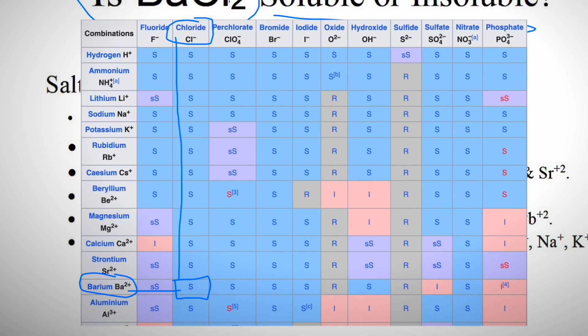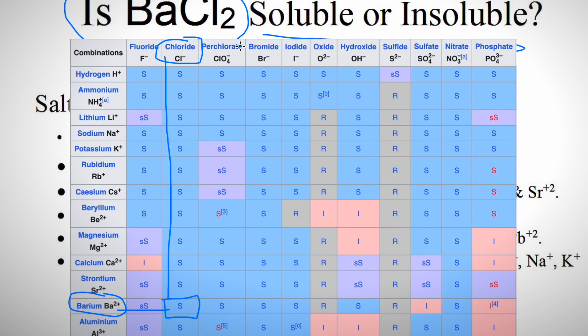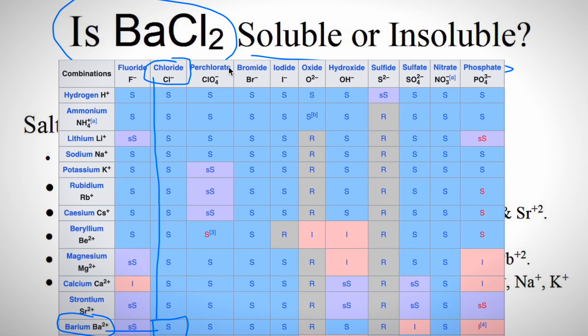Another easiest way to find out whether it is soluble or not, take some barium chloride in a test tube and then try to pour some water in it. We will see that it is completely dissolved in it. So the answer is barium chloride is soluble in water.